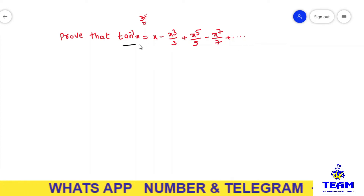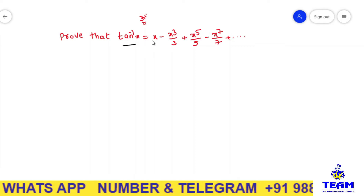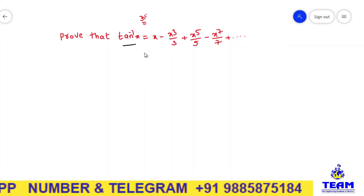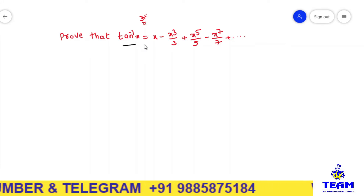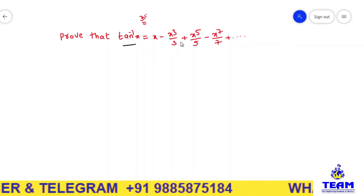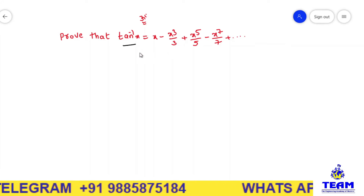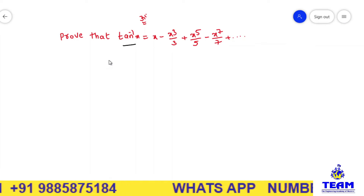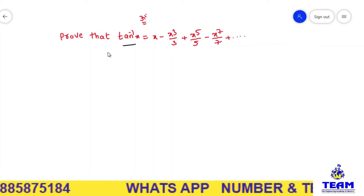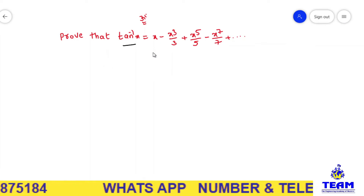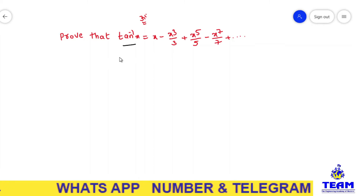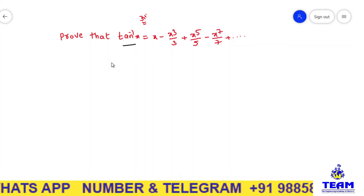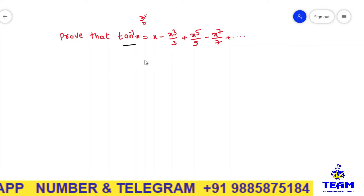By observation, you can say this is the tan inverse x expansion in powers of x. Generally, to expand tan inverse x in powers of x, we apply the Maclaurin series expansion. But in this case, we are not applying Maclaurin series — we are applying a special method known as expansion by using differentiation and integration of a known series.